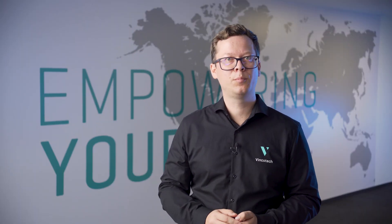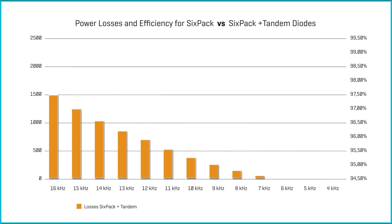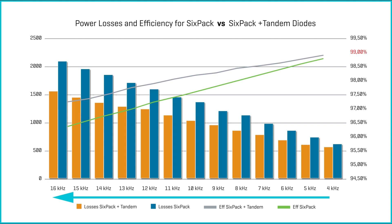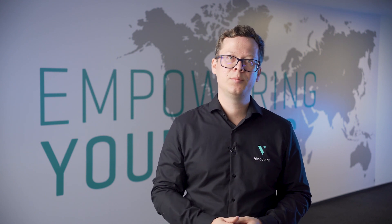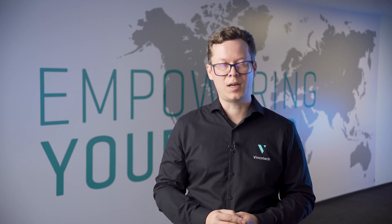Comparing the semiconductor power losses between a 6-pack with tandem diode against a standard 6-pack topology shows interesting results. At low switching frequency, power losses are similar and both versions achieve efficiency ratings close to 99%. But with rising switching frequency levels, dynamic losses increase. However, for the configuration with tandem diodes, the increase of dynamic losses happens at a much lower ratio. This is the reason why tandem diode implementations are recommended for 6-pack topologies operating at high switching frequencies.